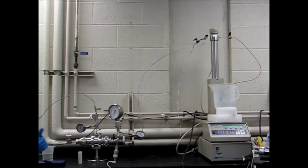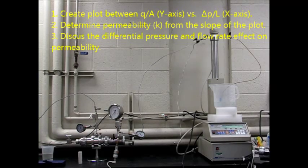Then what you will do is create a plot between Q divided by A on the Y axis and delta P divided by L on the X axis. Determine the permeability K from the slope of that plot.